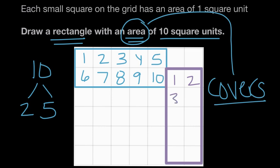So 1, 2, 3, 4, 5, 6, 7, 8, 9, 10. So again, this rectangle covers 10 square units.